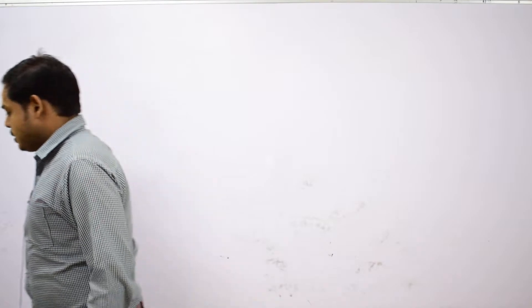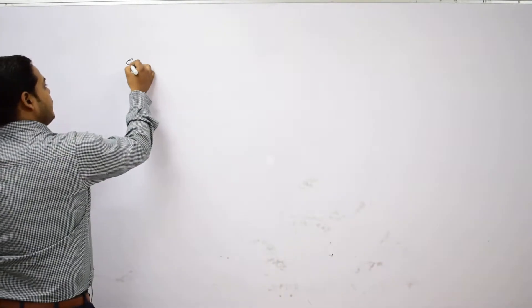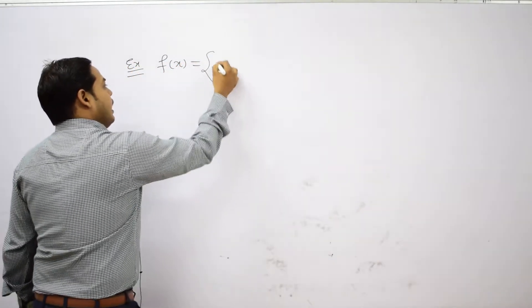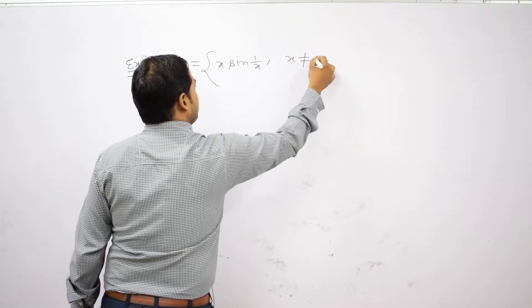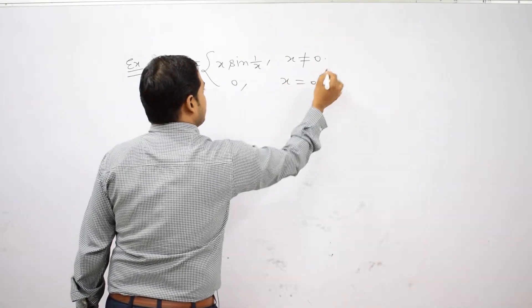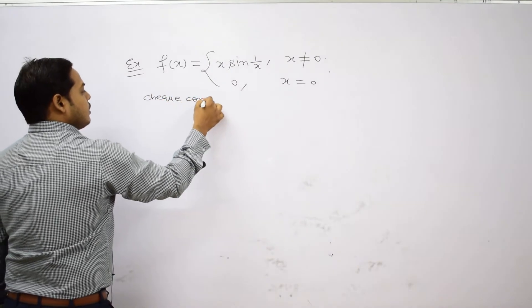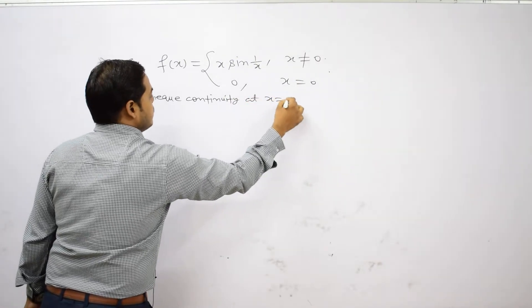There are many properties for continuity of a function. To discuss continuity at any point, the point must be a member of the domain; otherwise the value of the function cannot be defined. Let us consider an example. Suppose f(x) = x·sin(1/x) when x ≠ 0, and its value equals 0 when x = 0.